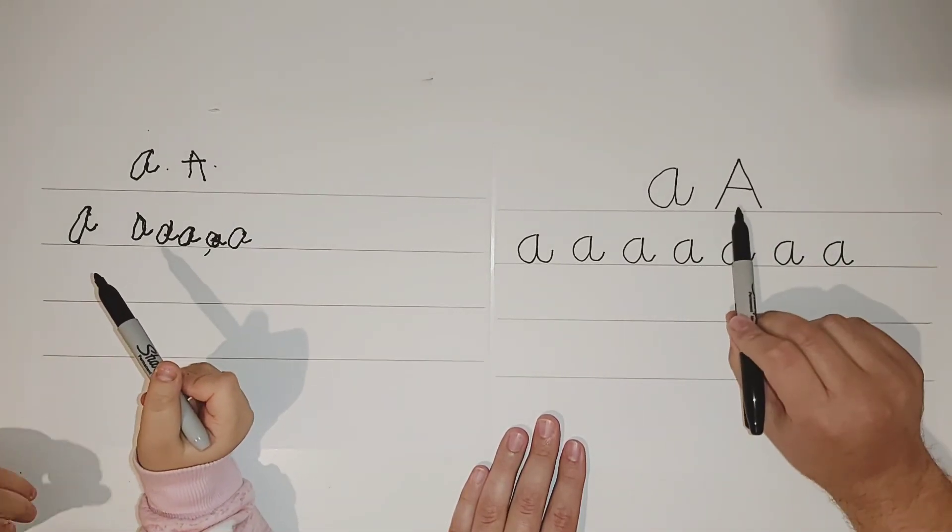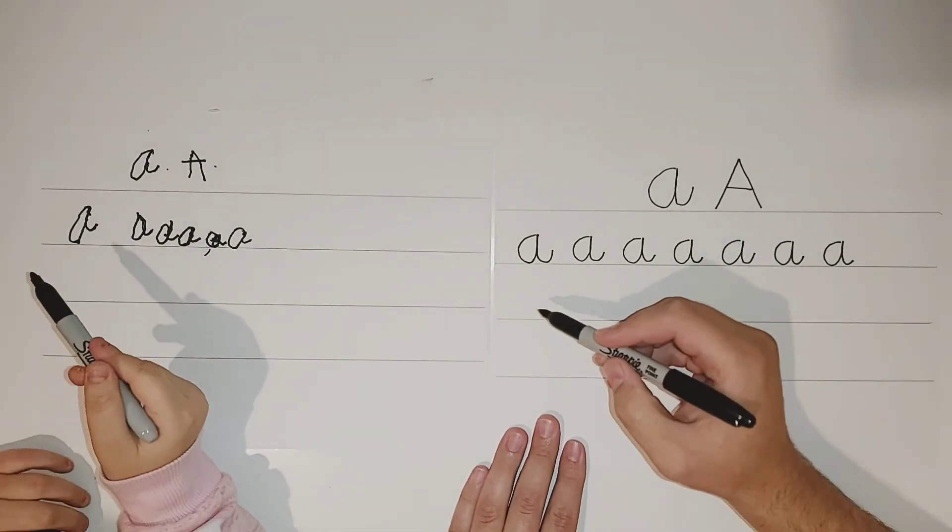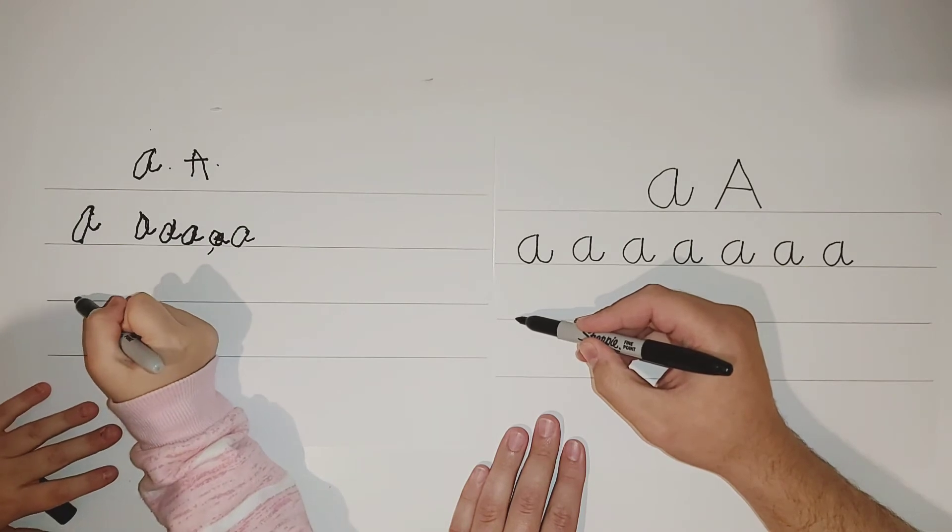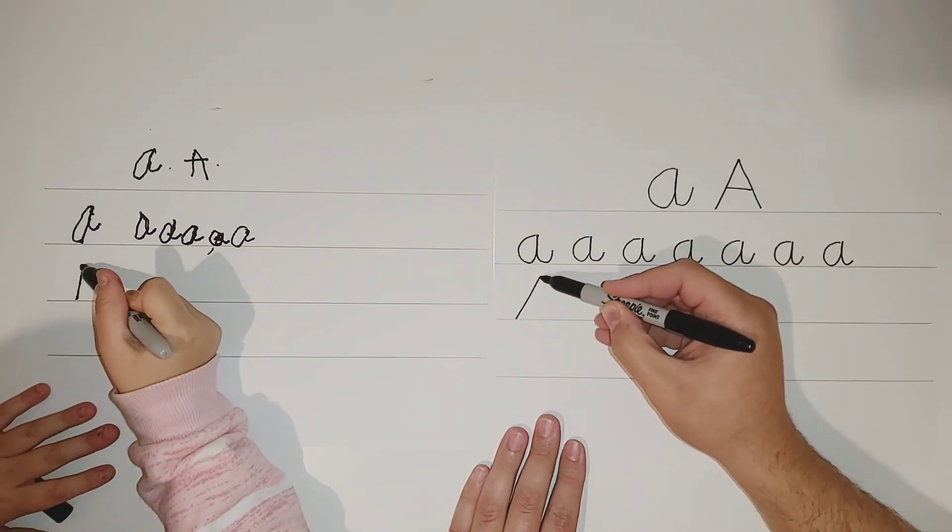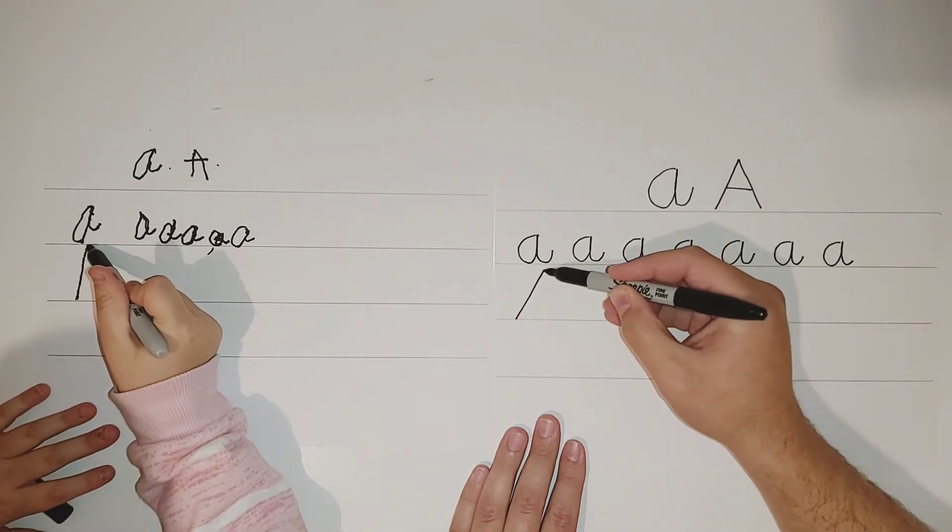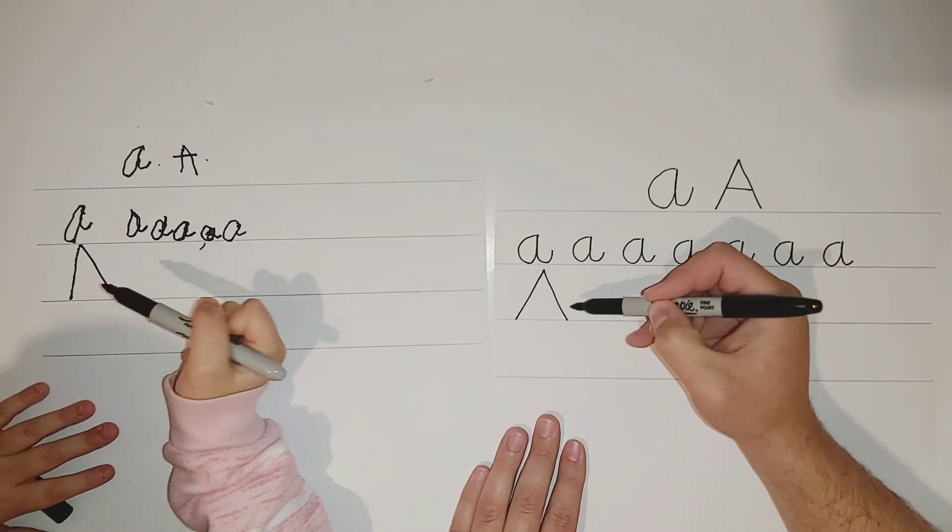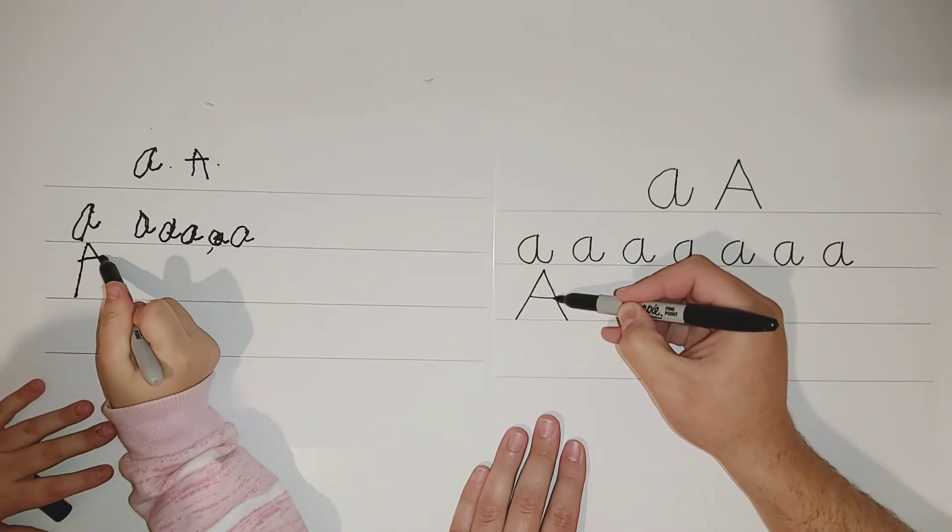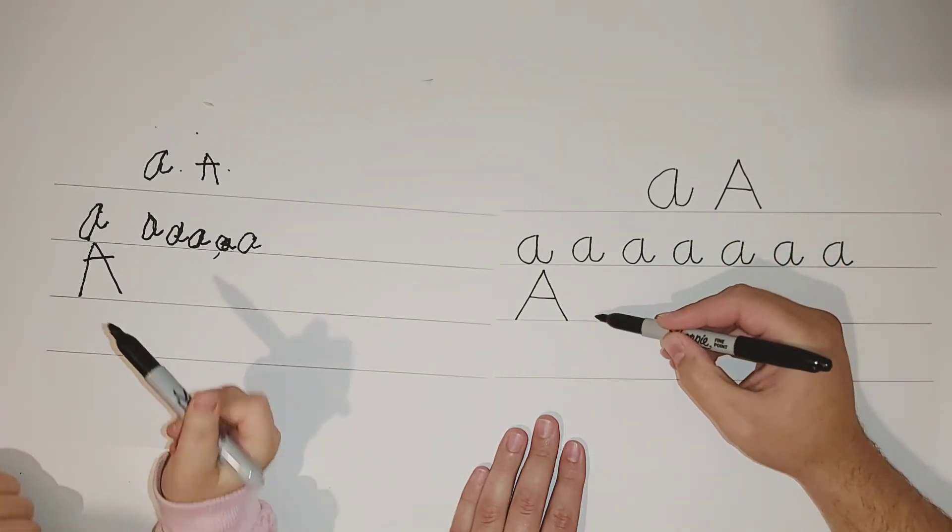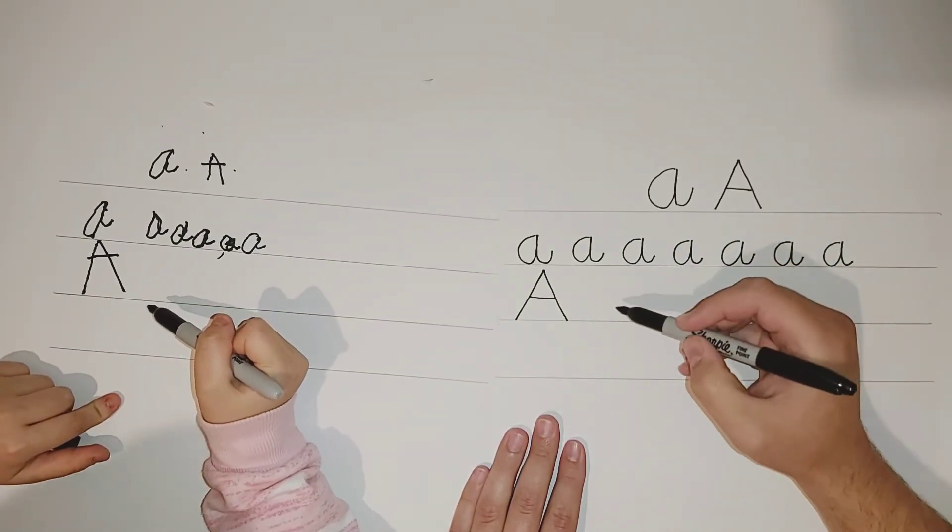Now we'll write capital A. Start from the bottom, go up to the top, back down the other way, and draw a straight line across. Carry on till the end.